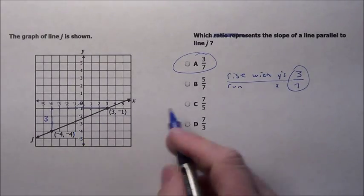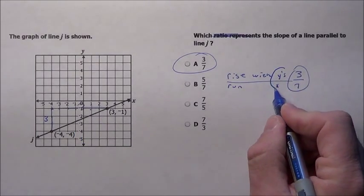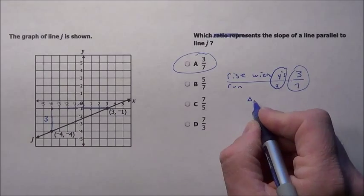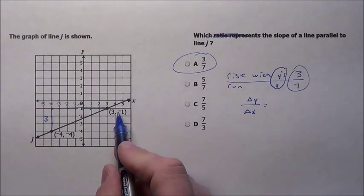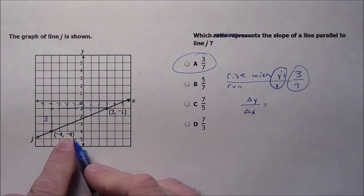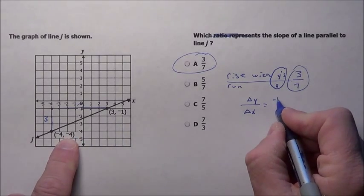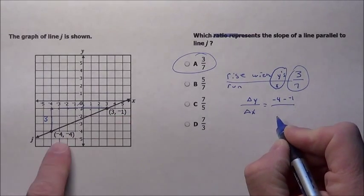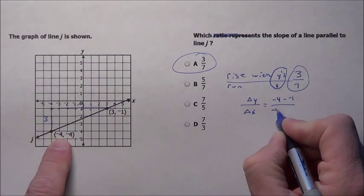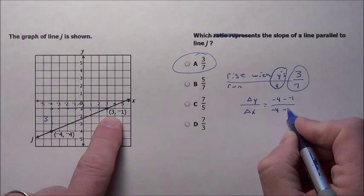If it had just given us points, we would have had to use this change of y's divided by change of x's. And all we would do is we'd subtract our y's, which in this case, we would go negative 4 minus that y, negative 1, over the change in x's. Negative 4 minus that x, 3.